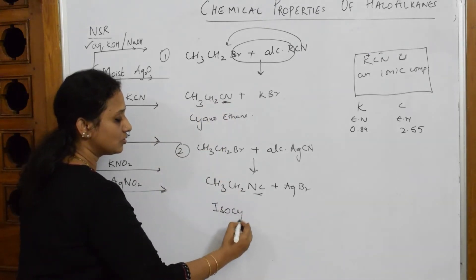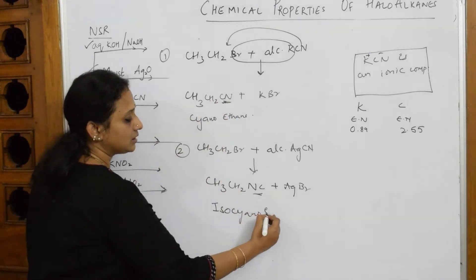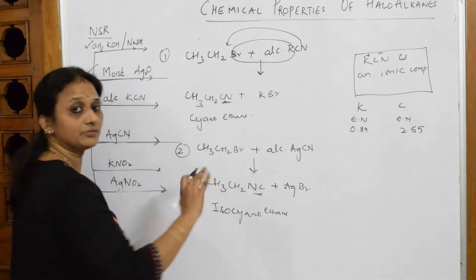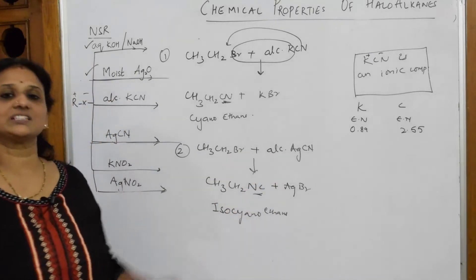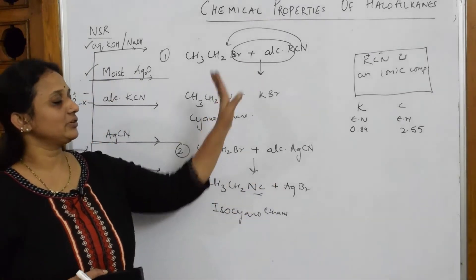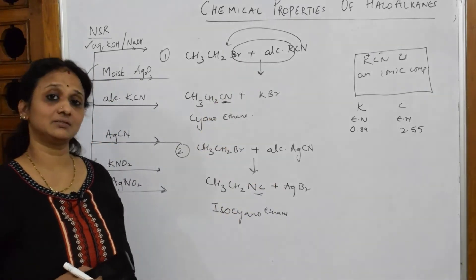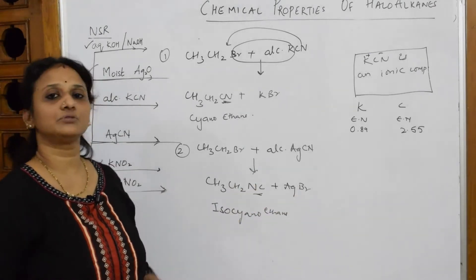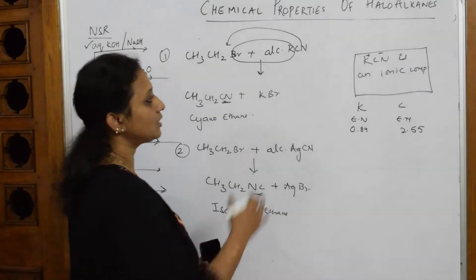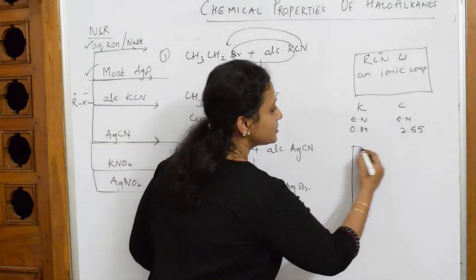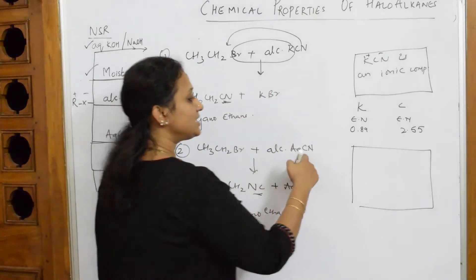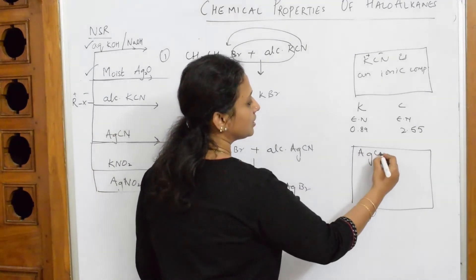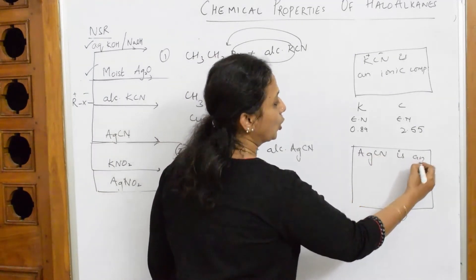This is called cyanoethane, this is called isocyanoethane. The reverse: cyano, isocyano, NC. Now I should reason this. That is where I have to concentrate in the exam. When it comes to AgCN, why is AgCN behaving like this? AgCN is a covalent compound.